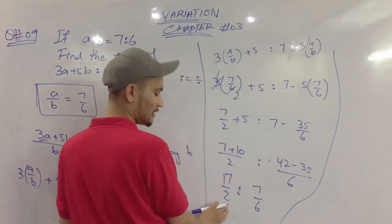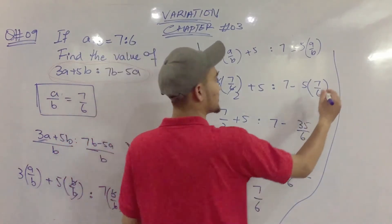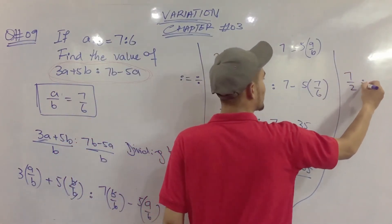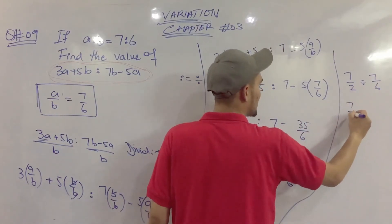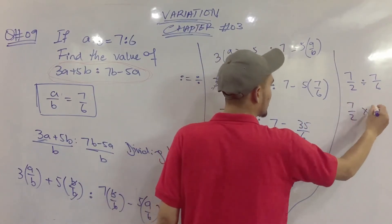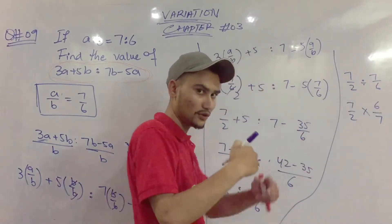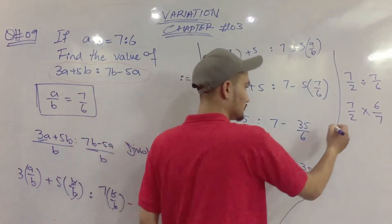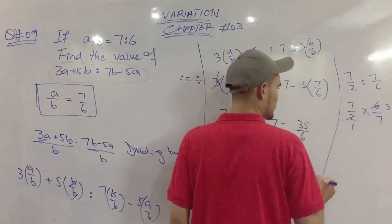Since ratio means divide, we convert: 7 divided by 2, ratio 7 divided by 6. We divide by multiplying by the reciprocal — 7 divided by 2, multiplied by 6 divided by 7. The 7s cancel, giving us 3.